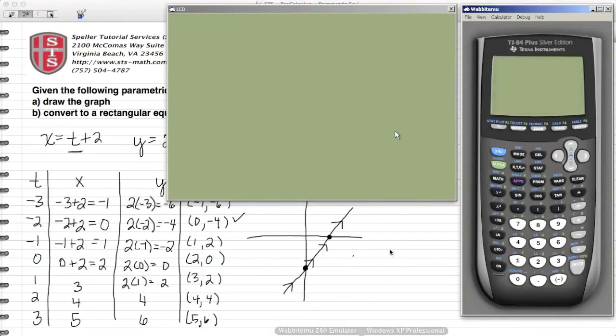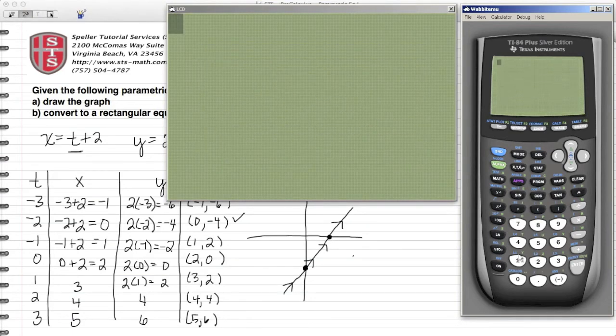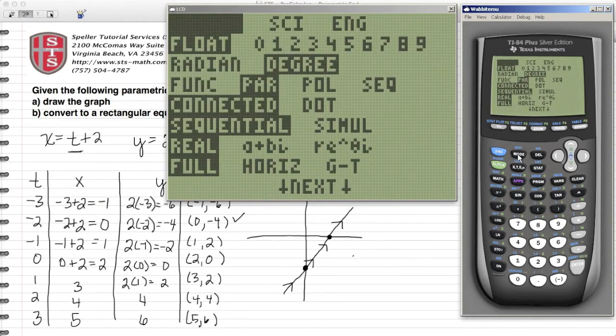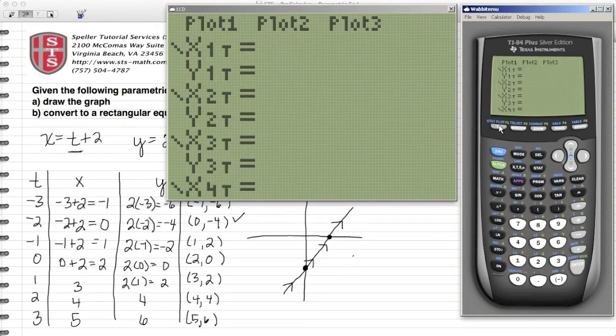Here I have the Texas Instruments 84 Plus Silver Edition. Let's go ahead and turn the calculator on and then make sure that we're in the proper mode. For these calculations, we need to be in parametric mode, which we see here. That's the only thing that we need to worry about for this particular set of equations. From here, let's go to our graphing mode and we're going to put in the two equations.